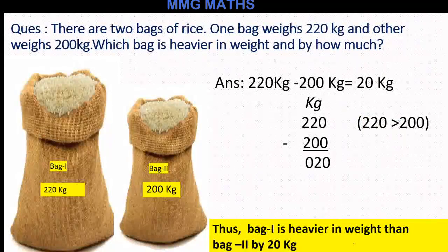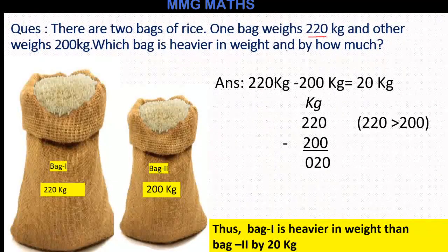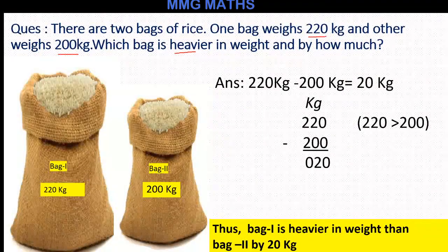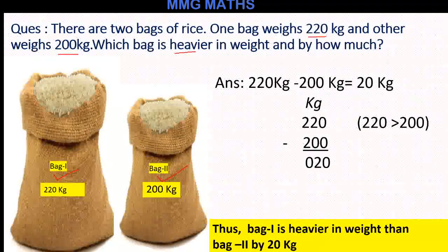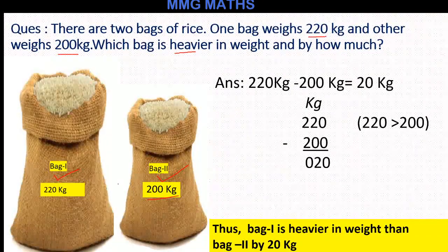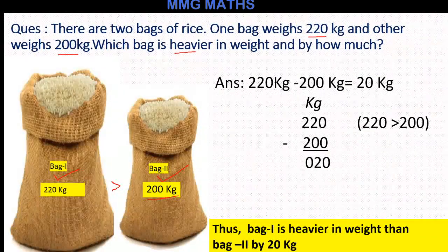Moving to the next page. Look here children — the question is: there are 2 bags of rice. One bag weighs 220 kg and another bag weighs 200 kg. Which bag is heavier in weight and by how much? Bag 1 weighs 220 kg and bag 2 weighs 200 kg. Since 220 is greater than 200, bag 1 is heavier than bag 2.